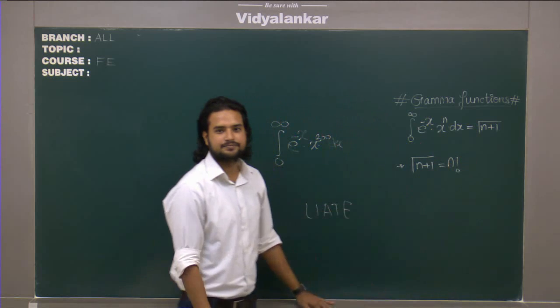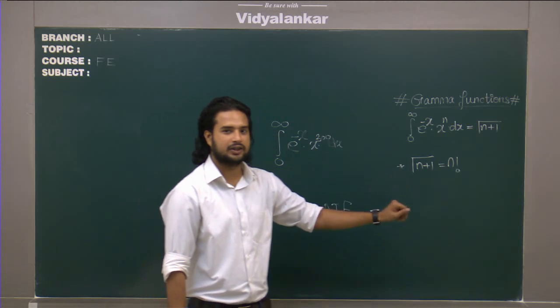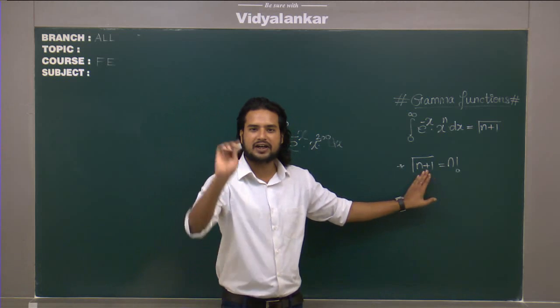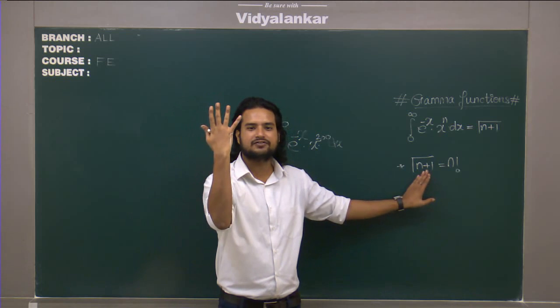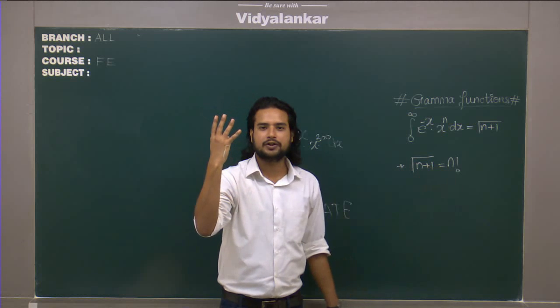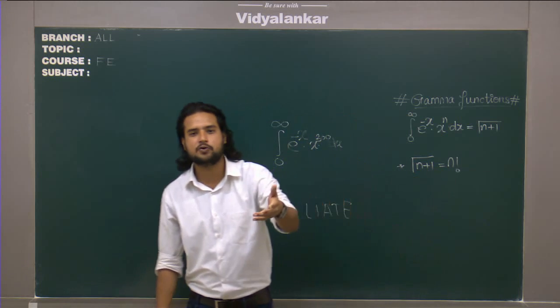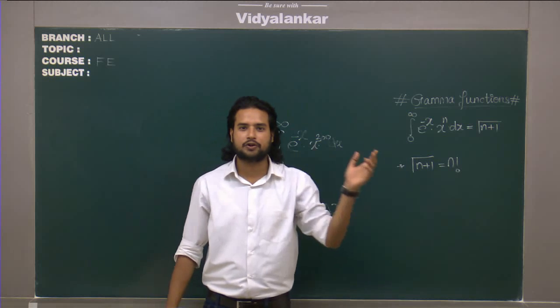So let me tell you about this now. If somebody says gamma n plus 1 it actually means n factorial. Gamma n plus 1 is a numeric value and it's nothing but n factorial. So if I have a number 5 over here I simply have to remove 1 and it becomes 4, 4 factorial. So it is n plus 1, n factorial. Reduce it by 1. Gamma 10, 9 factorial. Gamma 100, 99 factorial.